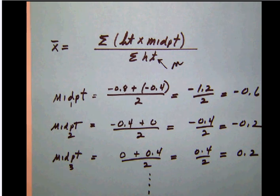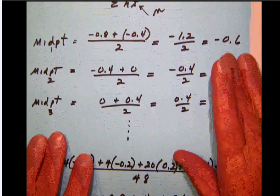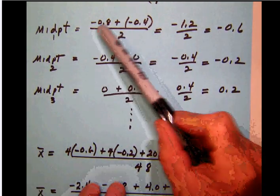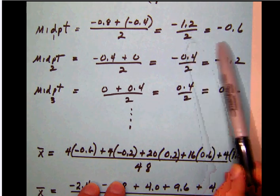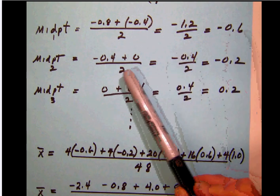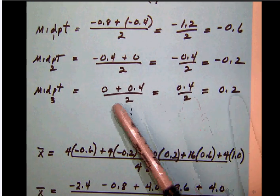In this case we have a fairly complicated set of midpoints because we have negative numbers and they're all decimals. For the first bar, the height is 4, and to get the midpoint we add the class boundaries and divide by 2. So negative 0.8 plus negative 0.4 equals negative 1.2, divided by 2 gives a first midpoint of negative 0.6. The next midpoint: negative 0.4 plus 0 equals negative 0.4, divided by 2 gives negative 0.2.